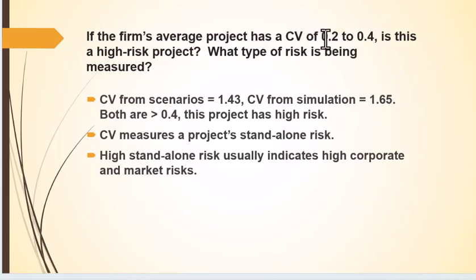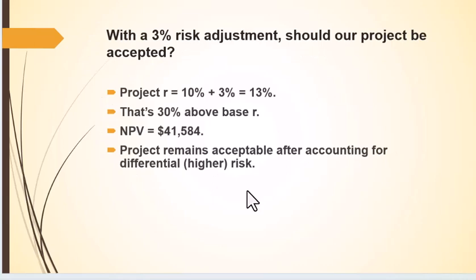These coefficients of variation indicate very high-risk projects. CV measures the project's standalone risk, and high standalone risk usually indicates high corporate and market risks. So maybe we add 0.3 — 30% above the base rate — to the project's weighted average cost of capital. At that point, the net present value is around $41,000, which is still acceptable even after accounting for the higher risk differential.